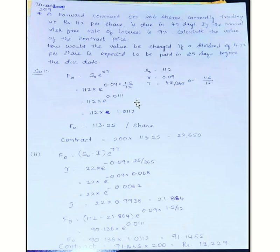The e power value is 1.0112. So 112, which is the spot price per share, the F₀ for 45 days at a risk-free rate of 9% should be 113.25. The lot size is 200 shares, so the contract value is 22,650 rupees. That is the first part of the problem.